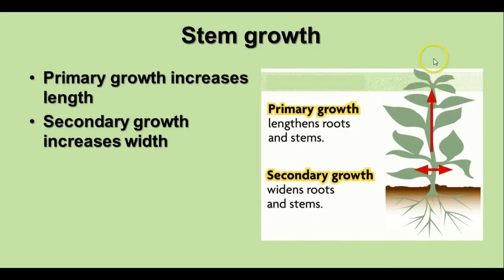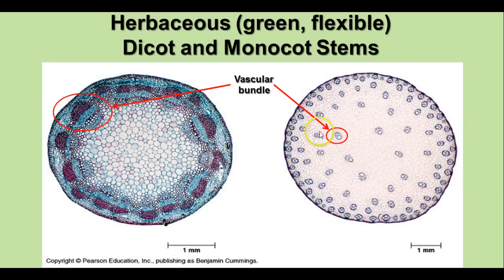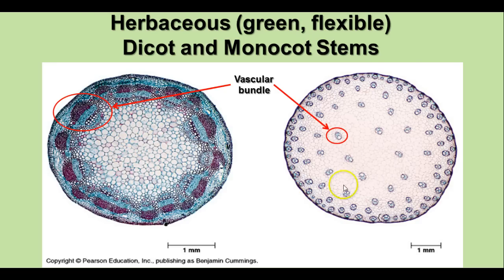When stems are growing, the primary growth of the stem increases the length, growing at the apical meristem. There's also secondary growth, which increases the width, widening the roots and stems. In cross-sections of dicot and monocot herbaceous stems, you see the vascular bundle with phloem and xylem tissue in the dicot arranged in a ring around the ground tissue in the middle, whereas in the monocot, vascular bundles are scattered throughout the ground tissue.